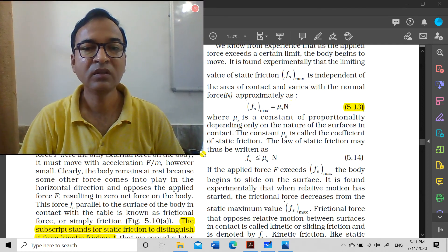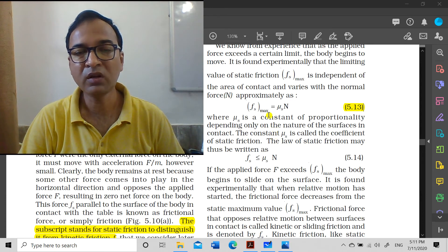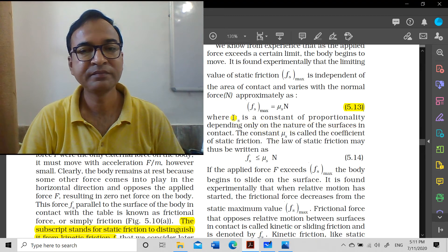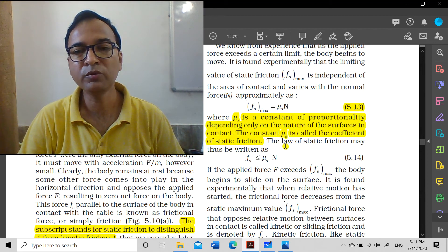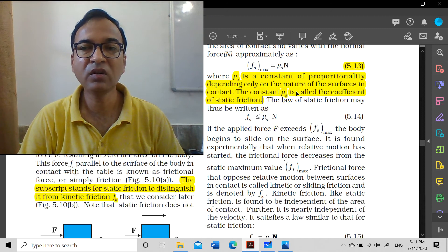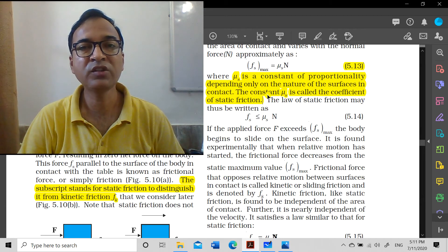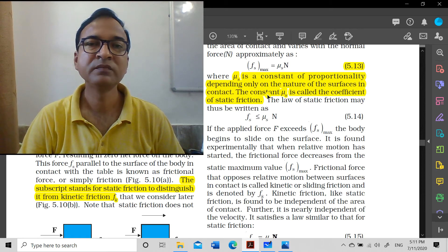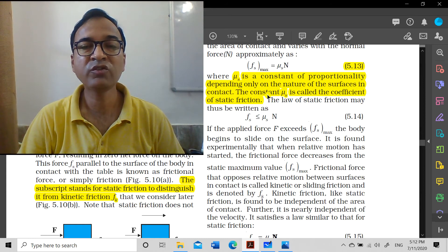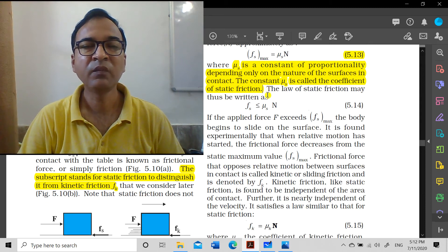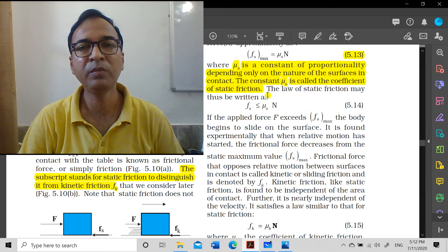So mu s is a constant of proportionality depending only on the nature of the surfaces in contact, called coefficient of static friction. You're asked what mu s depends on: only on the nature of the surfaces in contact - like road and rubber. At home, if you're riding a cycle, the floor could be marble or stone with different surfaces, smooth or rough. Accordingly friction will change. You can try moving a small toy car on different surfaces and see the impact on energy, how far it goes on rough versus smooth surfaces. This will help you understand how friction works.